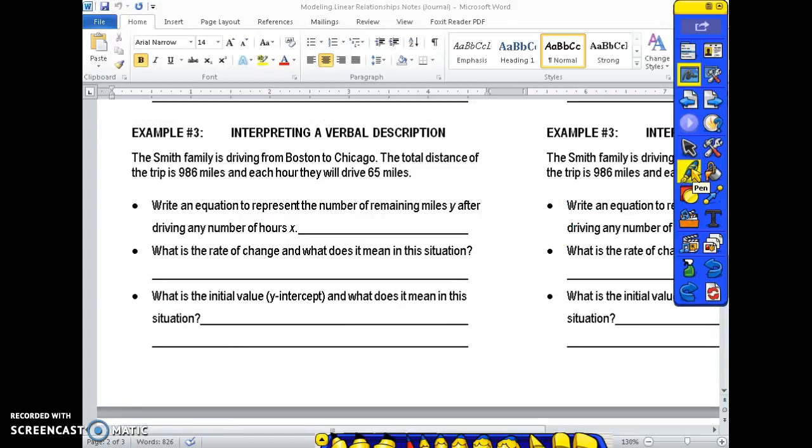All right number three. Interpreting a verbal description. The Smith family is driving from Boston to Chicago. The total distance of the trip is 986 miles and each hour they will drive 65 miles. So because this is each hour they're going to drive 65 miles, I know that's going to be my slope. And the total distance is 986. So that would be my y-intercept. Write an equation to represent the number of remaining miles y after driving any number of hours x. So y equals my slope is 65 but since I'm taking 65 miles out of my total that I have left each time that's going to be a negative slope. Negative 65x plus the total 986.